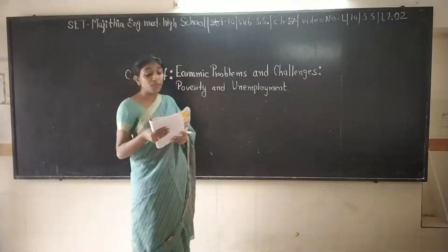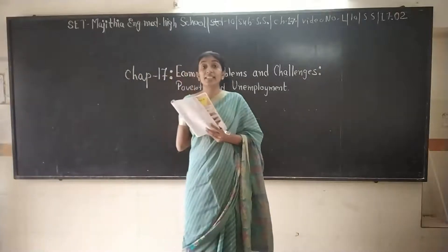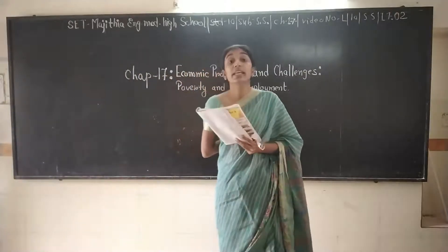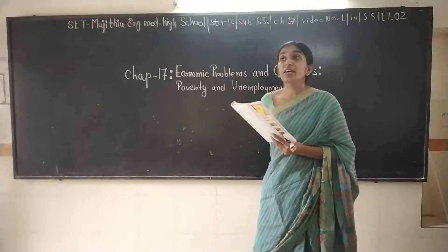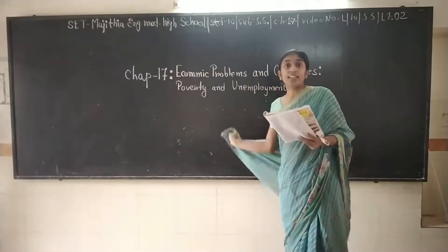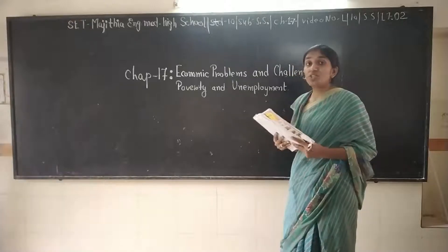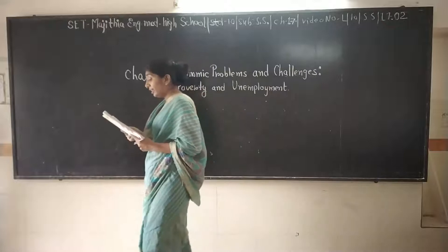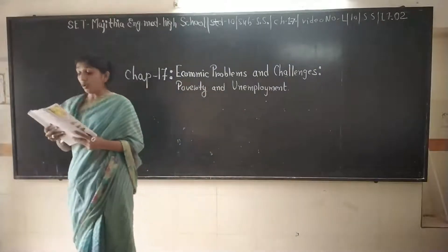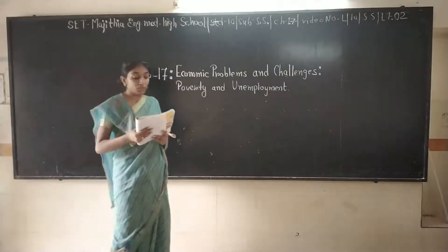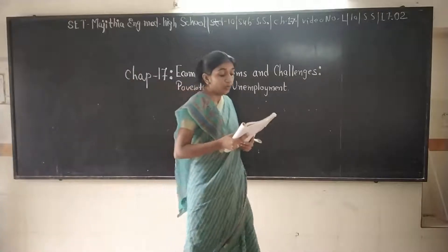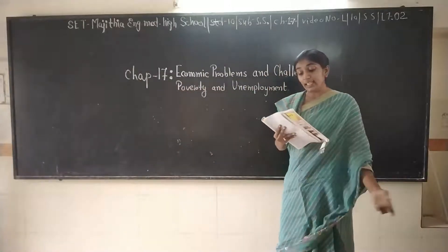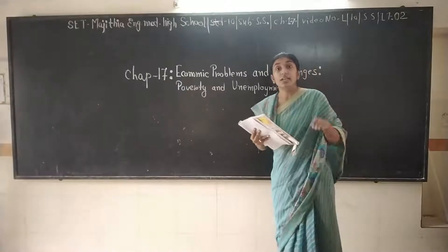So 21.9% are above the poverty line, meaning basically 79.1% — wait, 21.9% are below the poverty line. In 2009-10, the ratio of poverty in relation to India's population was 29.8%, so basically this is an 8% decrease.